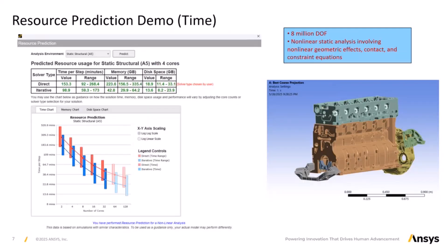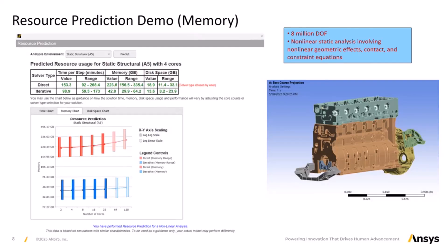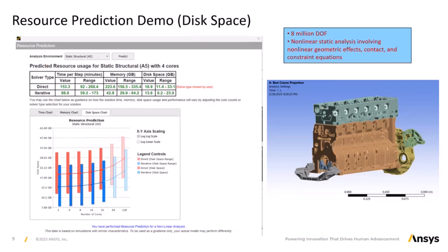The resource prediction tool contains three tabs. The first displays a graph illustrating predictive solve times for both the sparse direct and PCG solvers across varying processor core counts. Rather than providing a single estimate, the feature presents a confidence interval, quantifying the uncertainty in the prediction. The second tab displays anticipated memory consumption relative to the number of cores used, aiding in ensuring simulations are configured within available hardware constraints, preventing potential memory-related issues. The last tab predicts the required disk space for simulation results based on current usage.